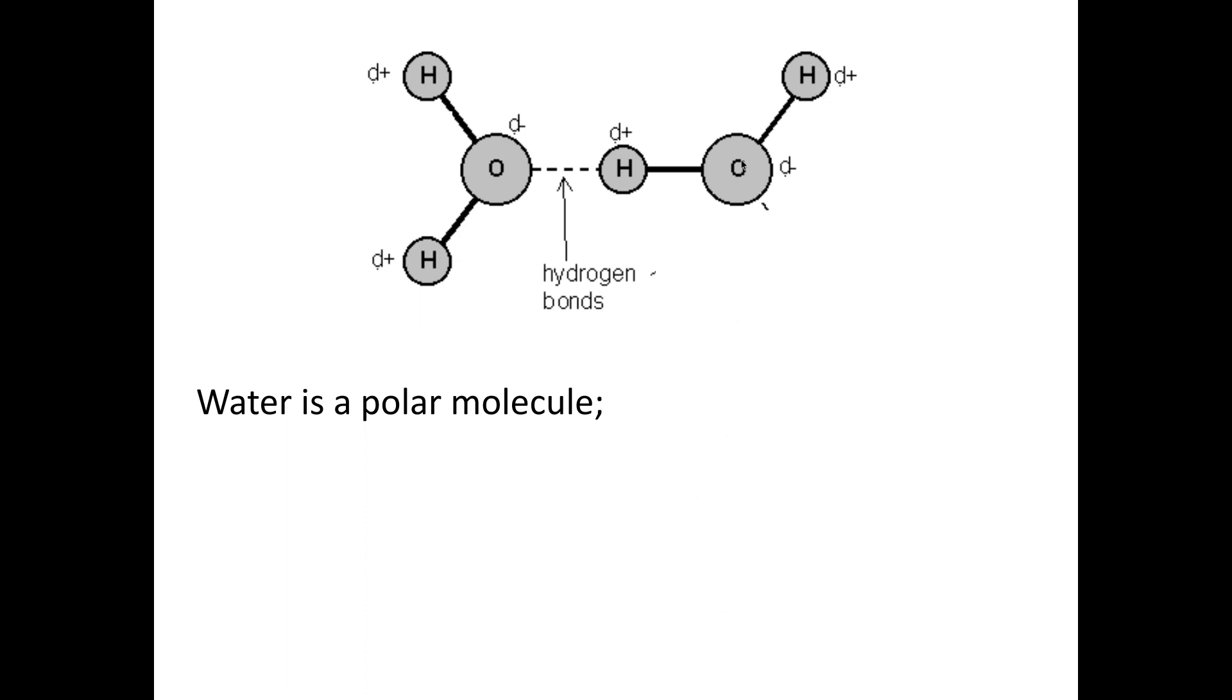We should have got something like this where I've got a dipole on every hydrogen and oxygen and I've labeled that hydrogen bond with a dashed line not a solid line. If it was a solid line that would represent a covalent bond and a hydrogen bond is not a covalent bond.